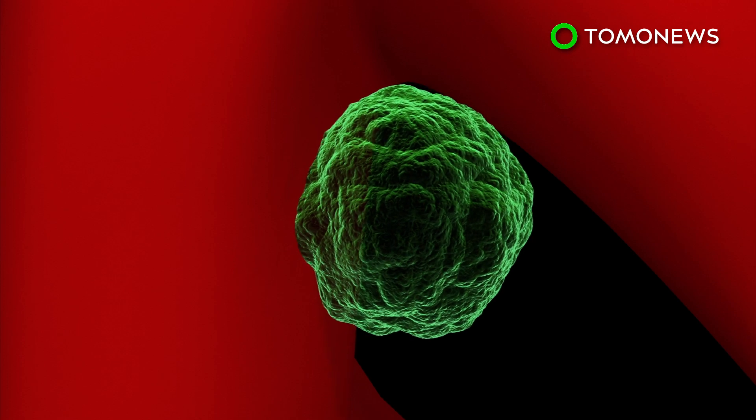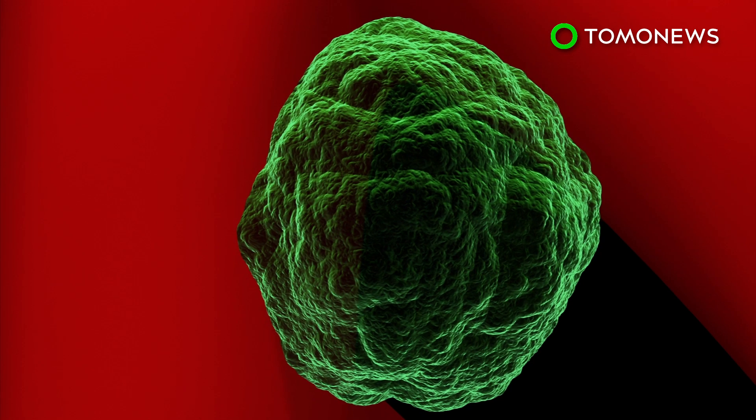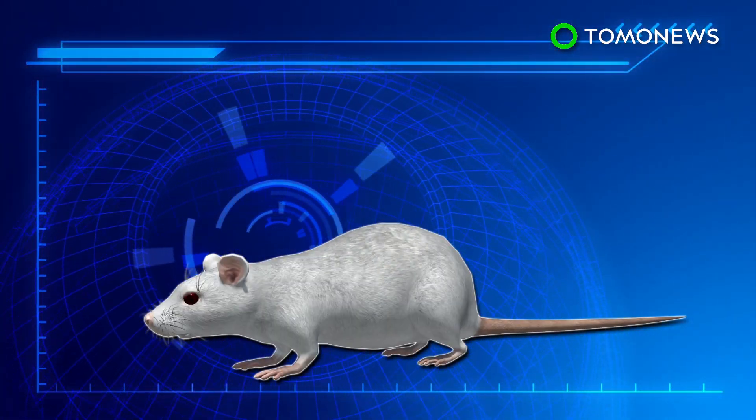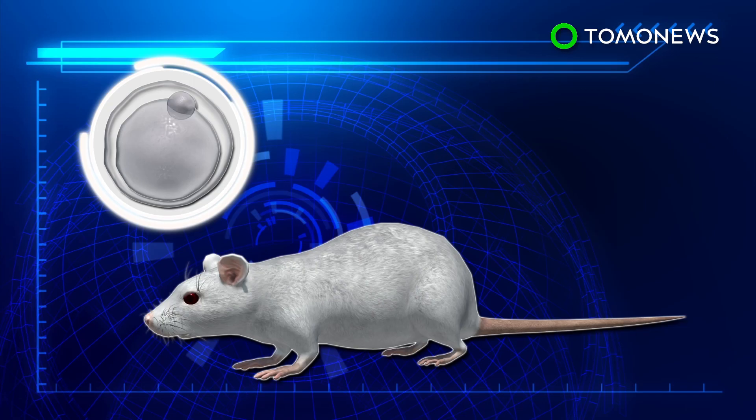The scaffold is filled with ovarian follicles, which contain immature egg cells. The structure is then transplanted into infertile mice, where the follicles continue to mature until ovulation.